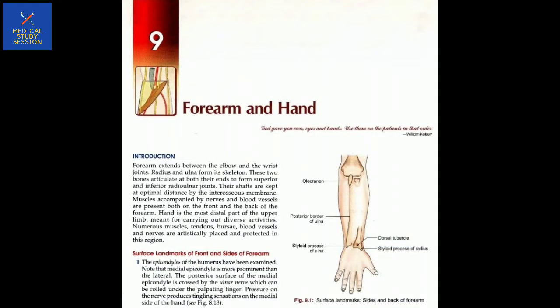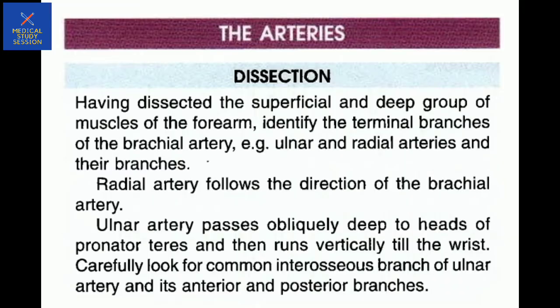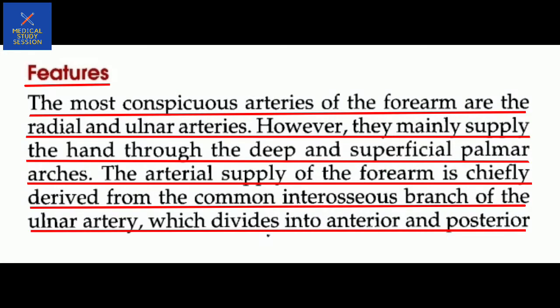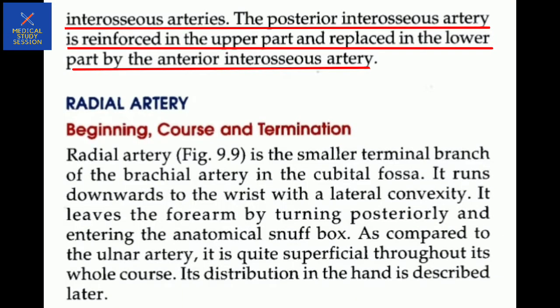Hello guys, it's my video on the topic forearm and hand, chapter 9 part 2. Starting with the arteries: the most conspicuous arteries of the forearm are the radial and ulnar artery. However, the main supply of the hand is through the deep and superficial palmar arch. The artery supply of the forearm is chiefly derived from the common interosseous branch of the ulnar artery, which divides into the anterior and posterior interosseous artery. The posterior interosseous artery is reinforced in the upper part and replaced in the lower part by the anterior interosseous artery.